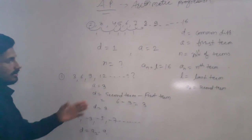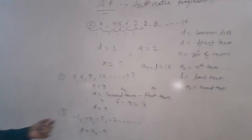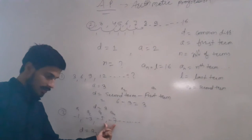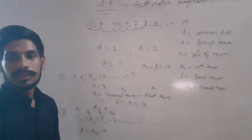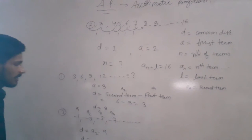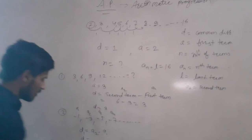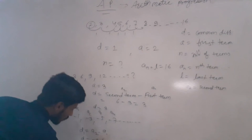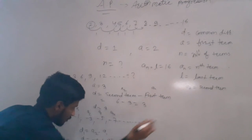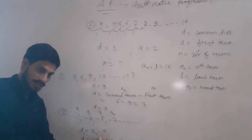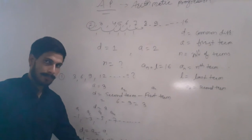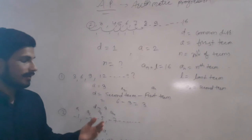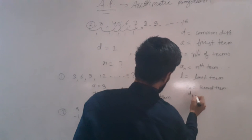We check by computing A2 minus A1. This gives us the first common difference D1. A2 is minus 3 and A1 is minus 1. So D1 equals minus 3 minus minus 1, which is minus 3 plus 1. Minus and minus makes plus, so D1 equals minus 2.